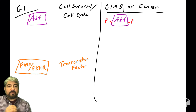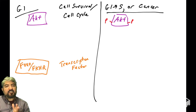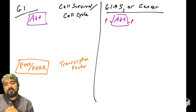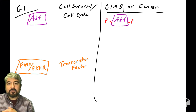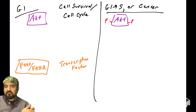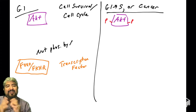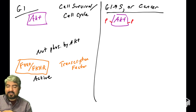Let's introduce another AKT substrate: a protein called FOXO, sometimes known as FKHR. There's a whole family of FOXO transcription factors, but we'll focus on the one commonly known as FKHR. A transcription factor is a protein that binds the promoter of a gene and turns on that gene — transactivates it for gene expression. AKT regulates this transcription factor by phosphorylating it. When AKT is not phosphorylating FOXO or FKHR, this transcription factor can be in an active state.